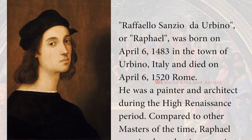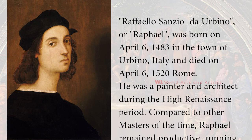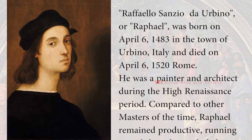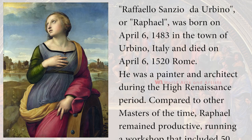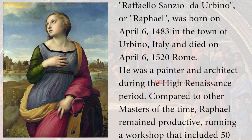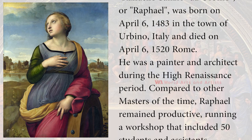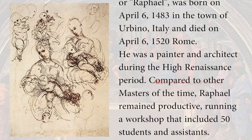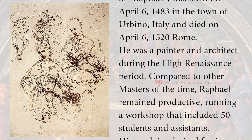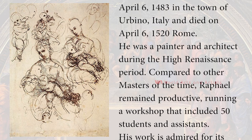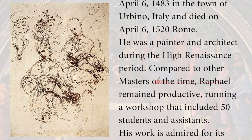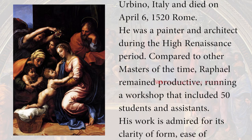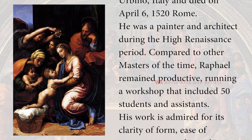Raffaello Sanzio d'Urbino, or Raphael, was born on 6 April 1483 in the town of Urbino, Italy, and died on 6 April 1520 in Rome. He was a painter and architect during the High Renaissance period.